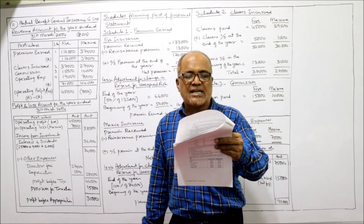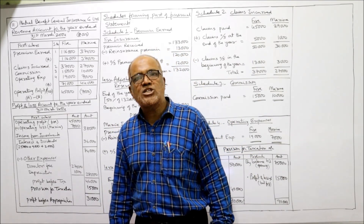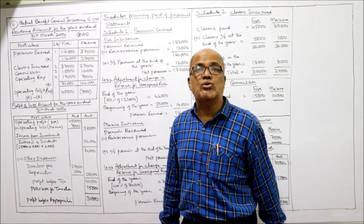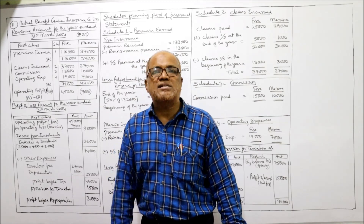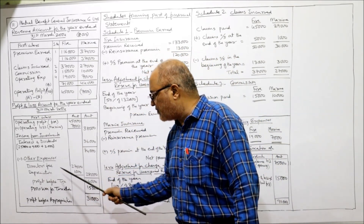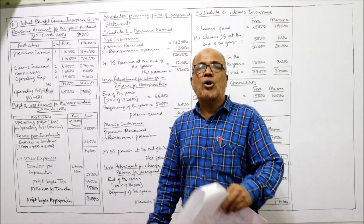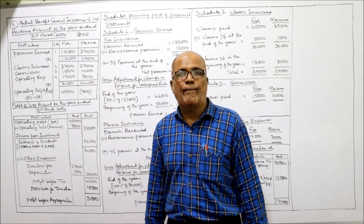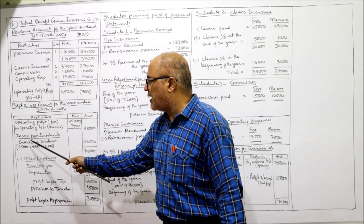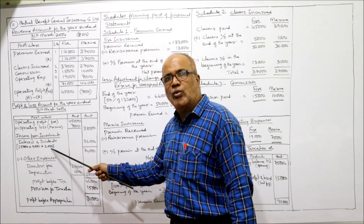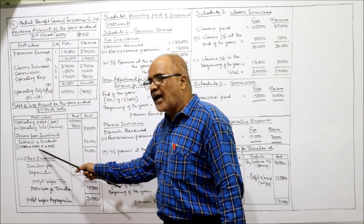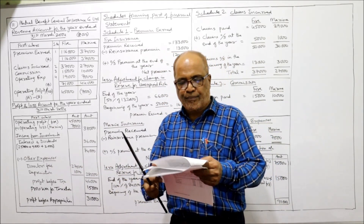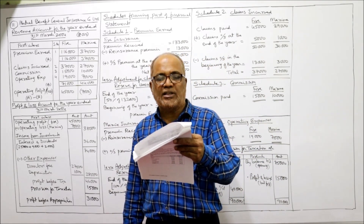Adjustment A: depreciation on fixed assets at 10% to be provided. Fixed assets at beginning of year = 10,000; 10% of 10,000 = 1,000, so depreciation = 1,000. Adjustment B: interest accrued = 2,000 — accrued means due but not received, so it is added to interest income. Total income from investments = 25,000 (dividend) + 9,000 (interest received) + 2,000 (interest accrued) = 36,000.